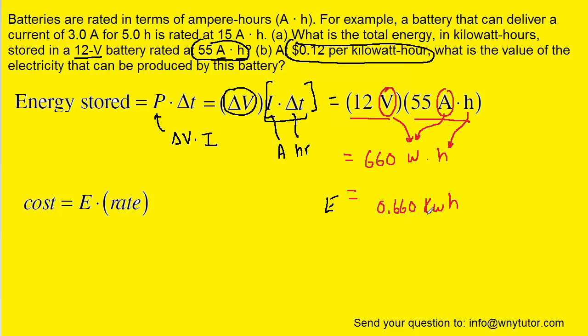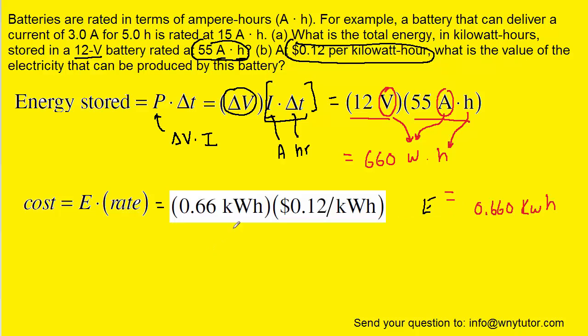And then we just determined that the energy was 0.66 kilowatt hours. So basically we're just going to multiply our energy by that rate, and that's going to give us the overall cost.